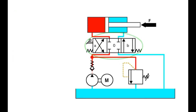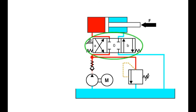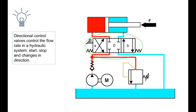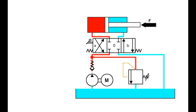Now the setup is at the point where we can safely extend the hydraulic cylinder. The purpose of directional control valves is to ensure that the hydraulic cylinder can also be retracted. Directional control valves control the start, stop, and change of direction of flow rate in a hydraulic system. This example uses a directional control valve with three switching positions — A, 0, and B — and four connections.